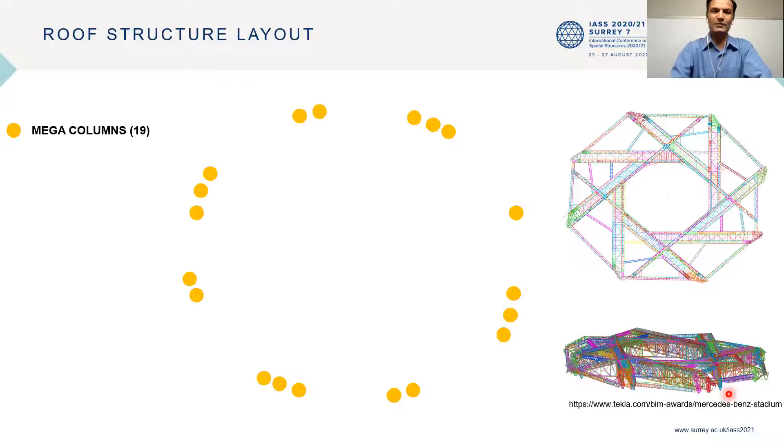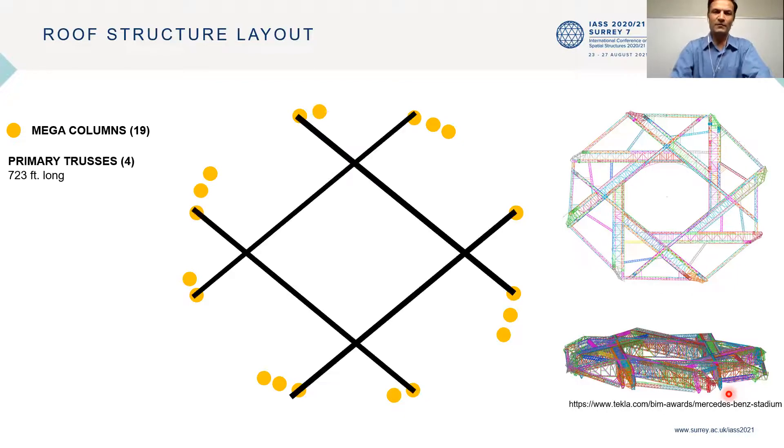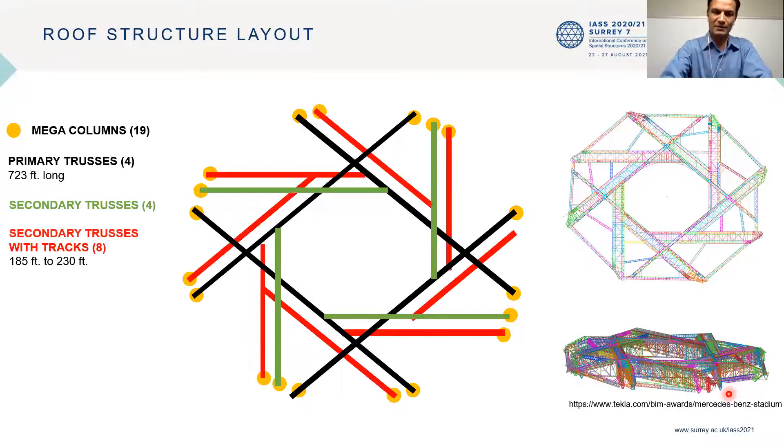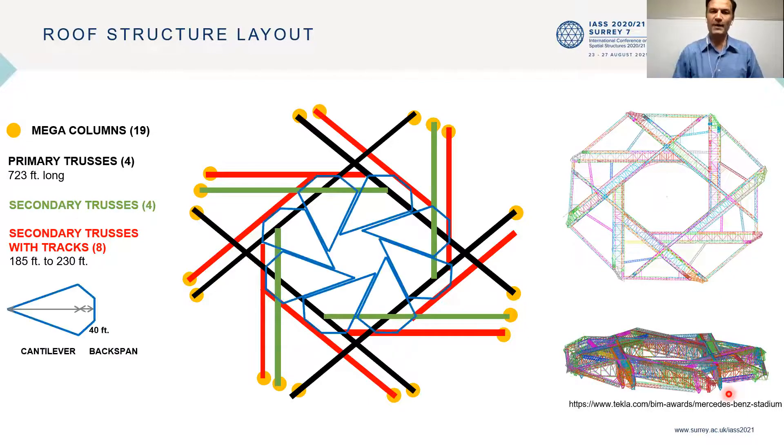So the main structure included 19 mega columns. There were four primary trusses, four other secondary trusses, and a set of eight other secondary trusses with tracks over which the petals, eight of them, move.